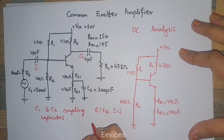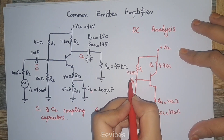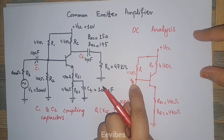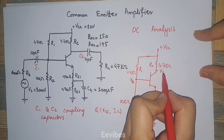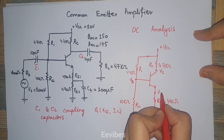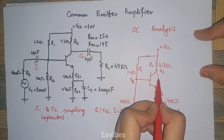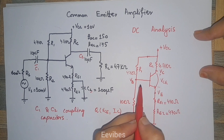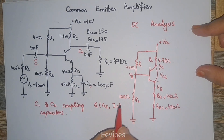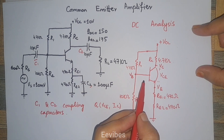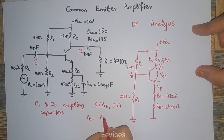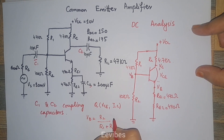For this voltage divider bias, since we are doing DC analysis, all parameters are denoted with capital subscripts. The voltages are marked as VB at the base, VC at the collector, and VE at the emitter terminal. The potential difference from collector to emitter is represented as VCE. To start the analysis, we determine VB using the simple voltage divider rule.